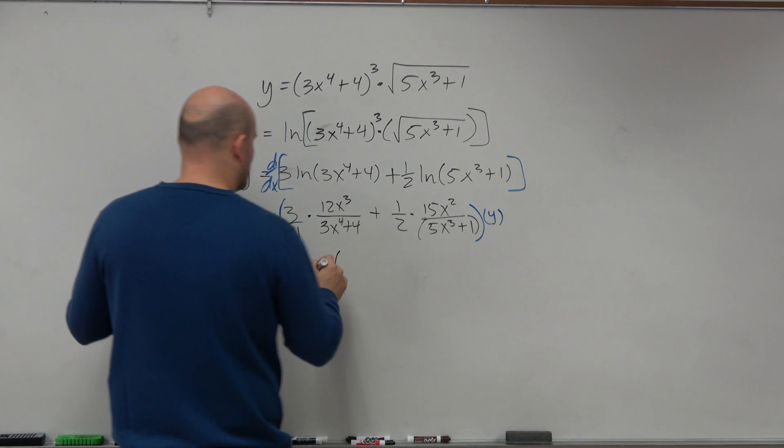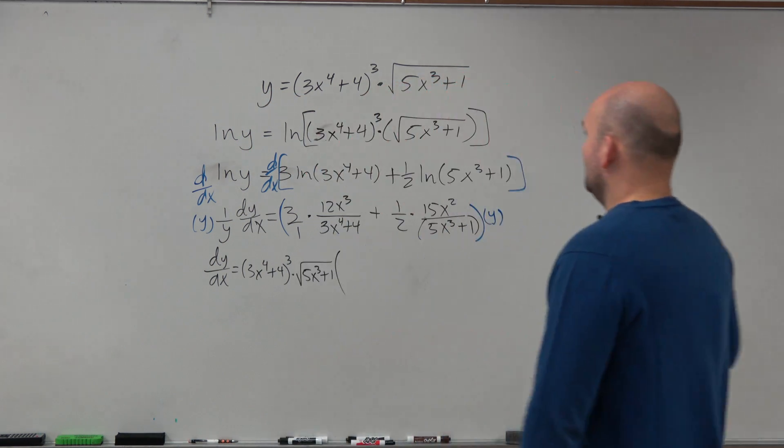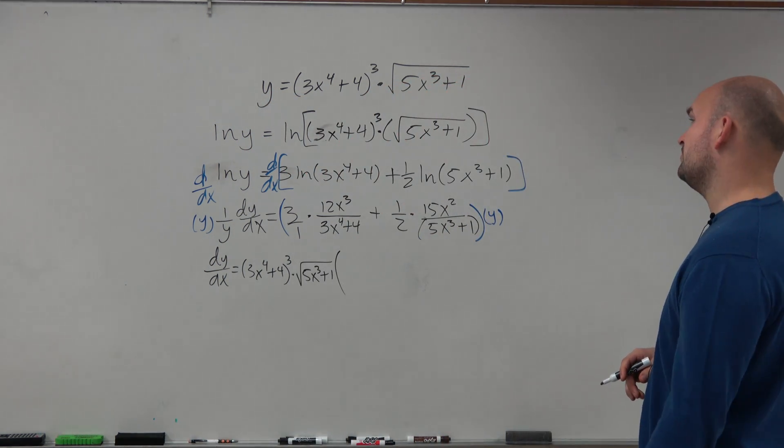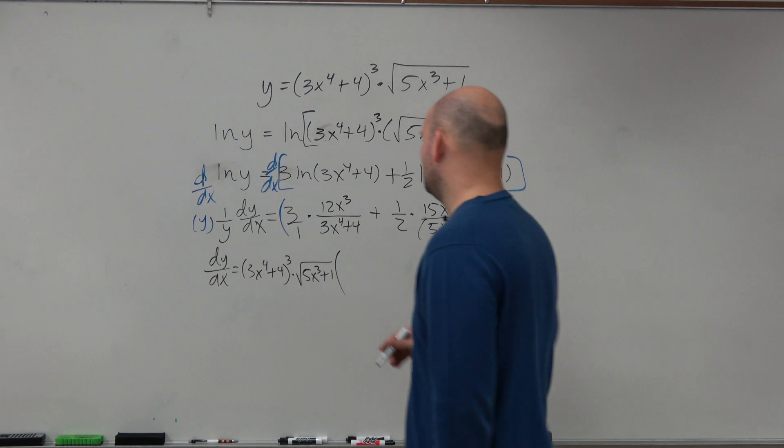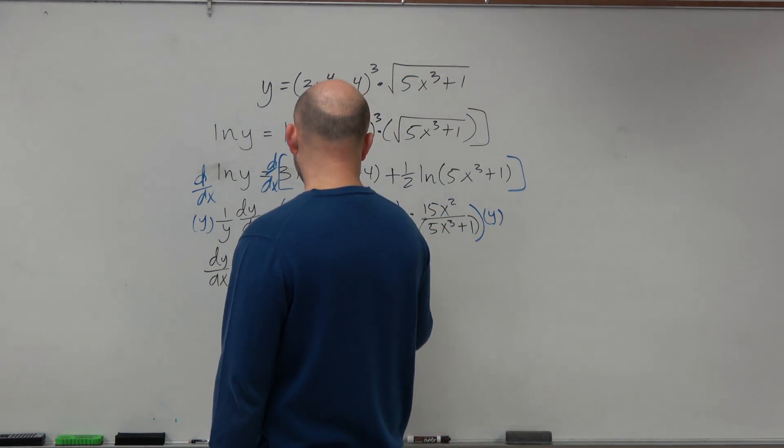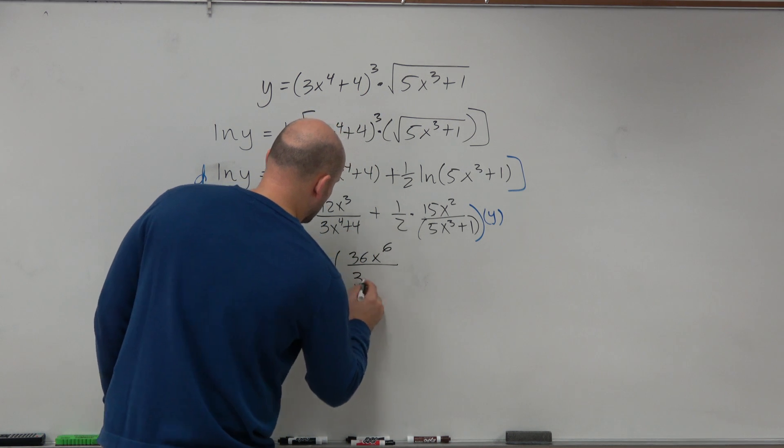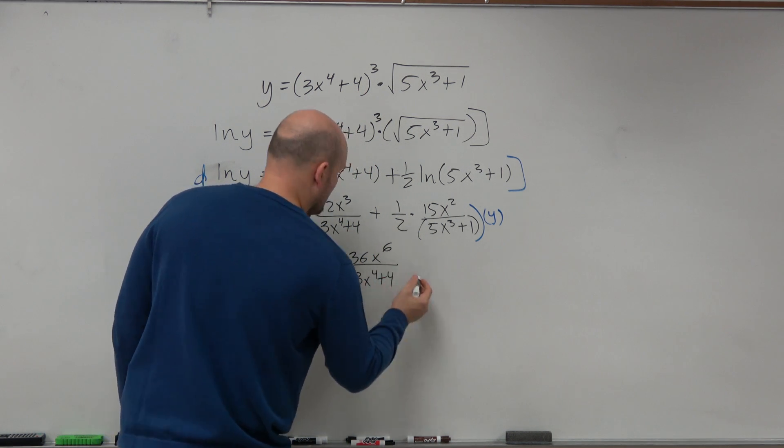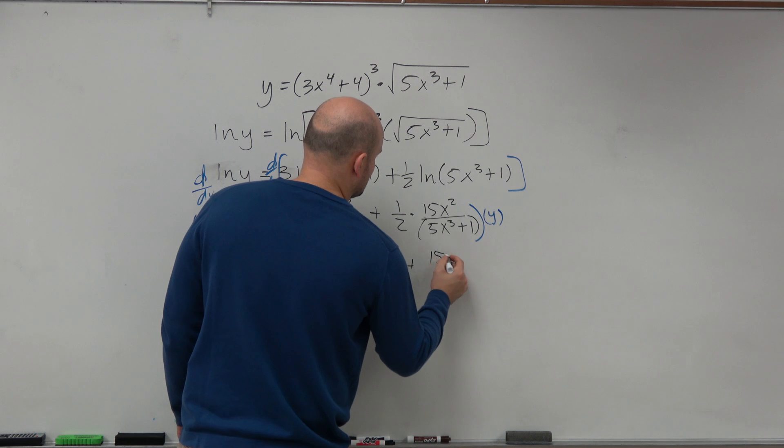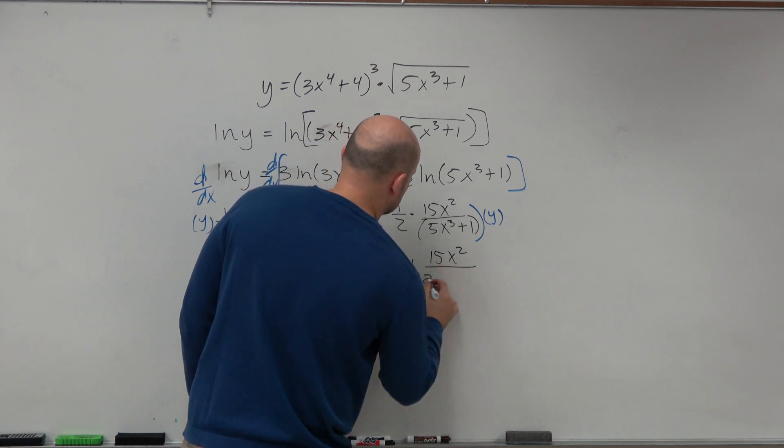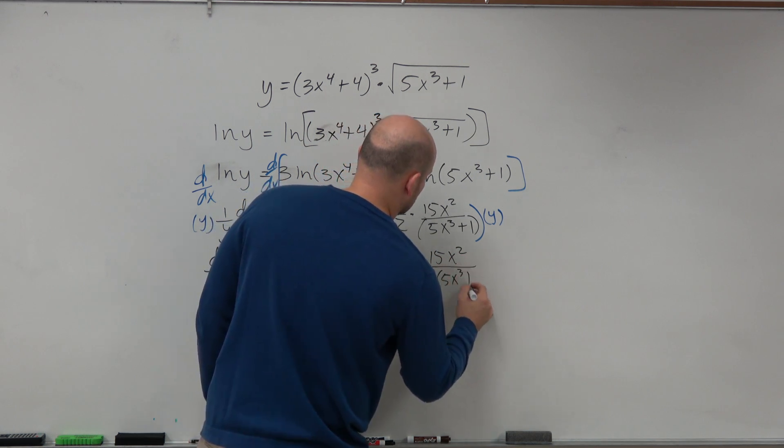Now here, I can multiply this across. So that's 36x cubed over 3x to the fourth plus 4 plus 15x squared times 2 over 5x cubed plus 1.